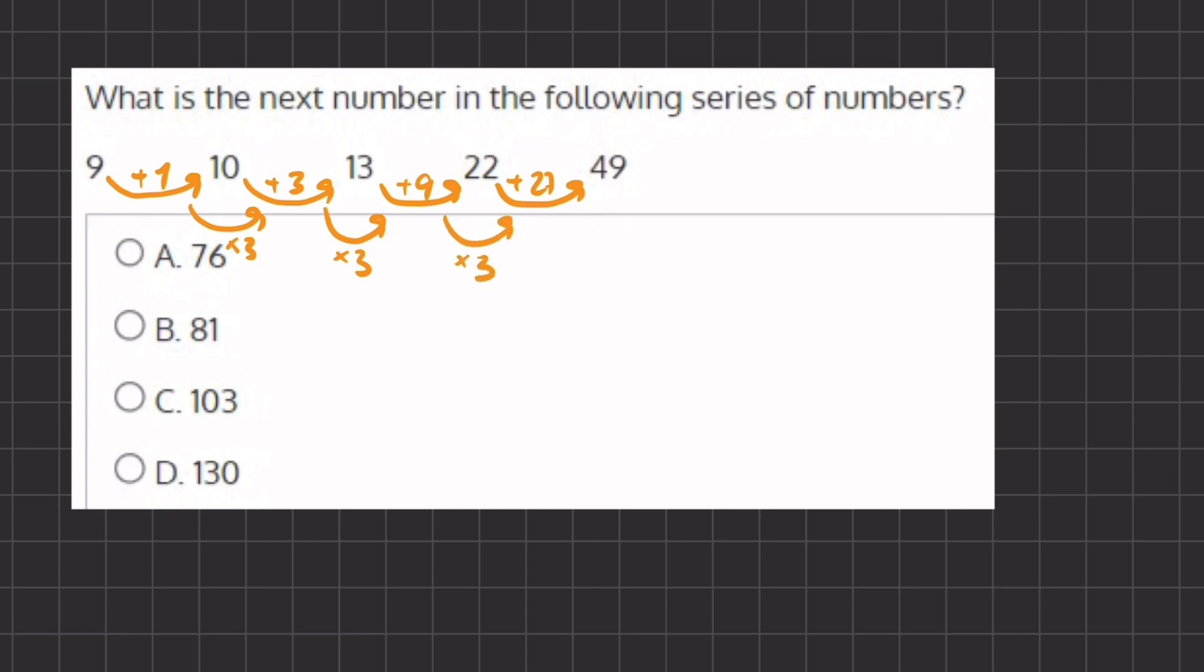And if we want to find our next missing value here, what we are adding by, we have to multiply 27 by 3, which will give us 81. Now we have to add 49 to 81. And here we get 130 as the next number. And so D is our final answer.